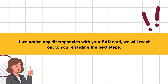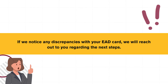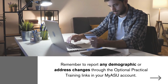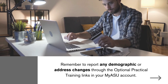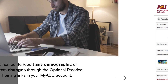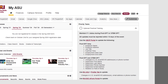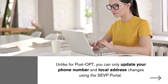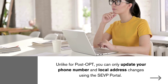If we notice any discrepancies with your EAD card, we will reach out to you regarding the next steps. Remember to report any demographic or address changes through the optional practical training links in your MyASU account. Unlike for post-OPT, you can only update your phone number and local address changes using the SEVP portal.